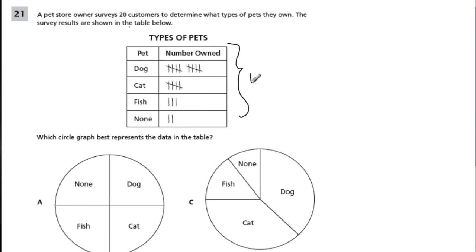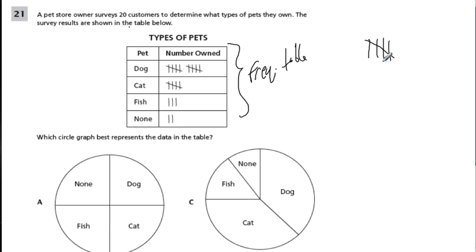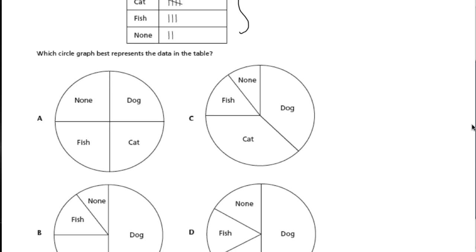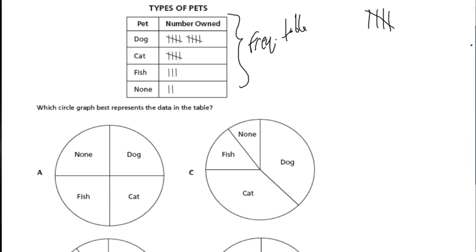This is called a frequency table. These are tally marks — 1, 2, 3, 4, and then the 5th has a diagonal line. So there are 10 people who had a dog, 5 had a cat, 3 had fish, 2 had none. They want you to connect the frequency table to a circle graph and ask which one best matches this data.